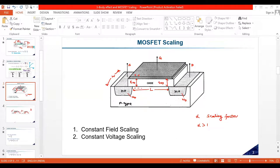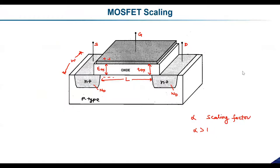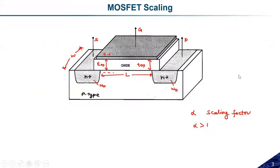In the last lecture, we started our discussion on MOSFET scaling — how we can scale down the MOSFET and what important things need to be considered. Basically, MOSFET scaling is needed for the design of high-density chips. The packing density of MOSFETs must be increased, and the only possible solution is to reduce transistor size. If you scale down transistors, packing density increases, but you need to follow certain rules to maintain device performance.